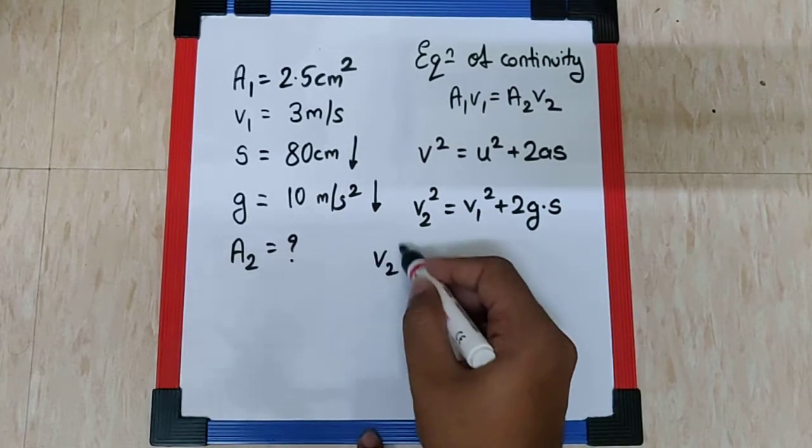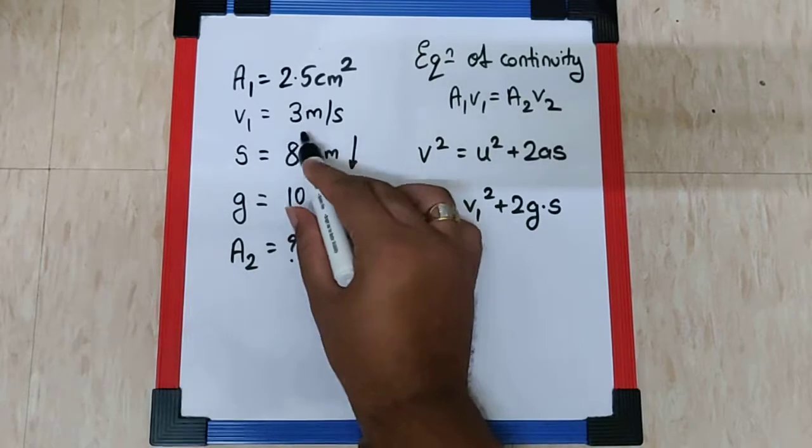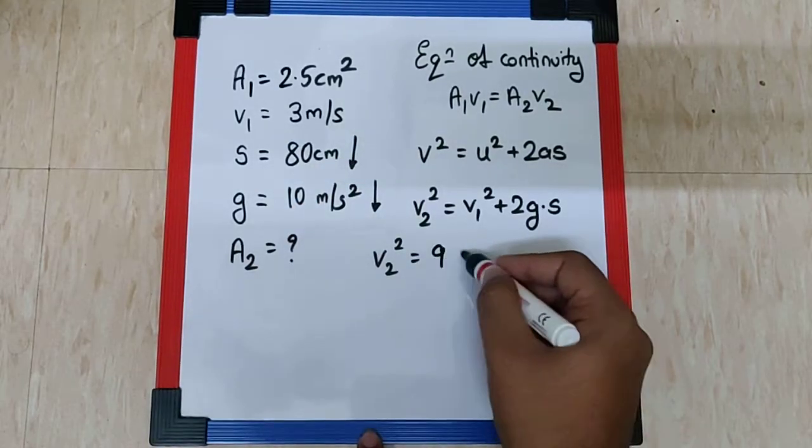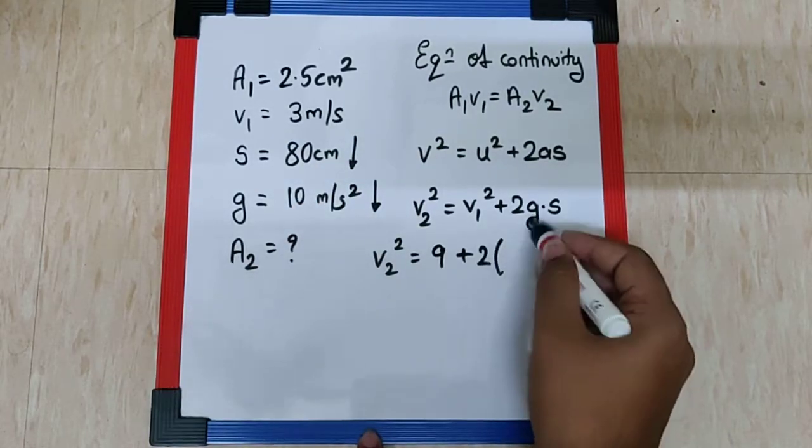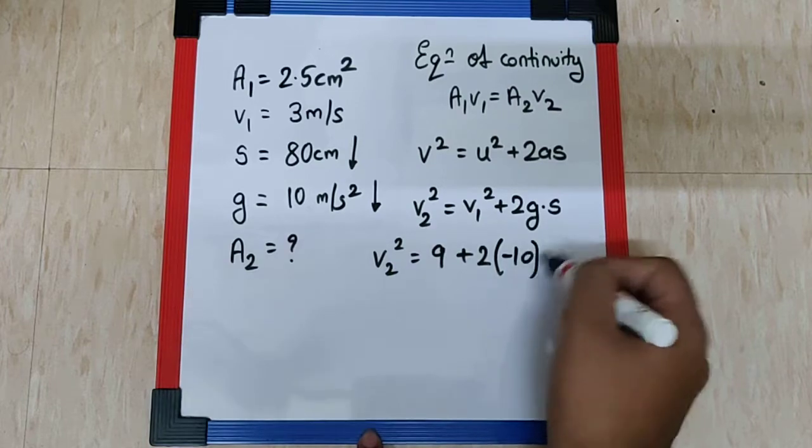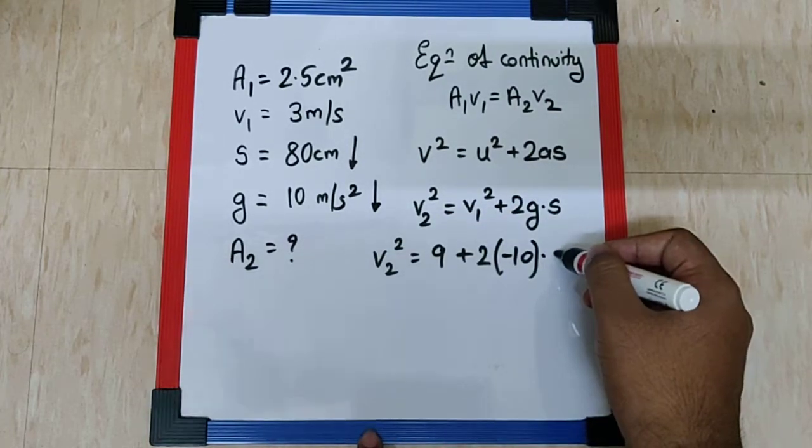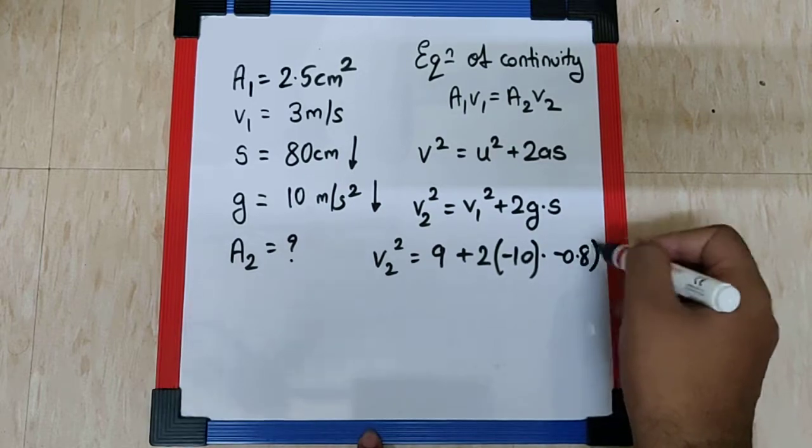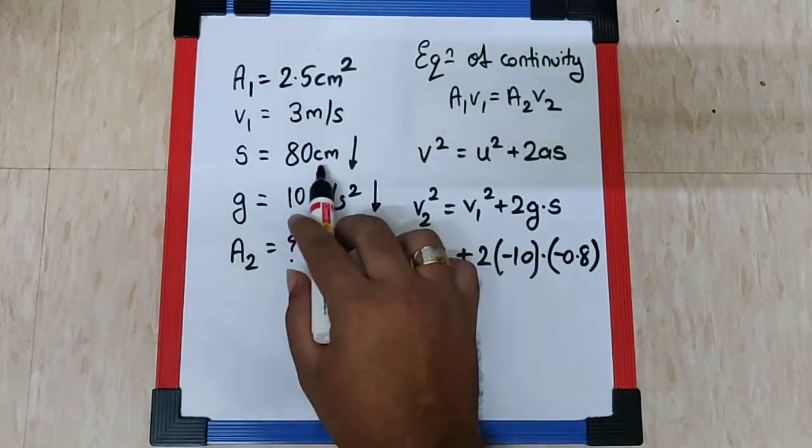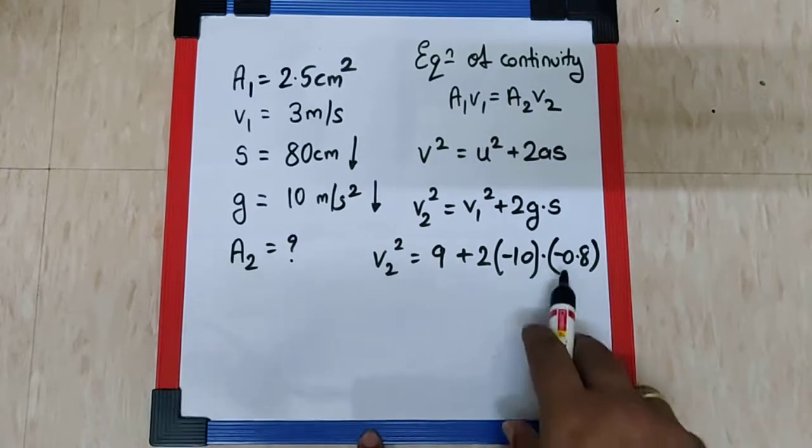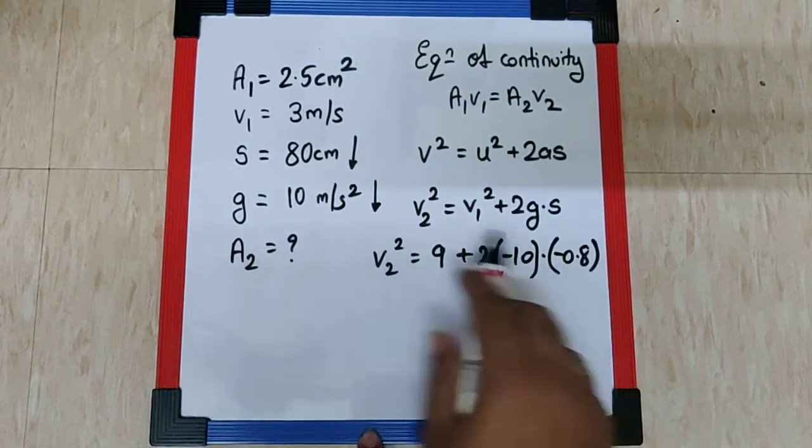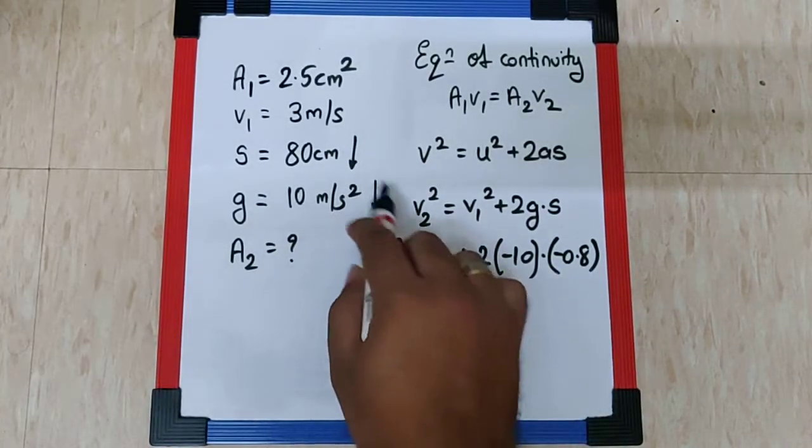So V2 is unknown. V1 is known which is 3, the square will be 9. Then 2. The acceleration due to gravity is minus 10 because it is downward. And the displacement is minus 0.8 meter. I repeat, this was in centimeter so I converted that into meter. Now this minus and minus is because both are working vertically downwards.